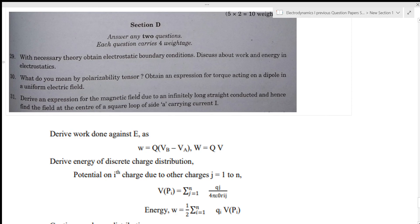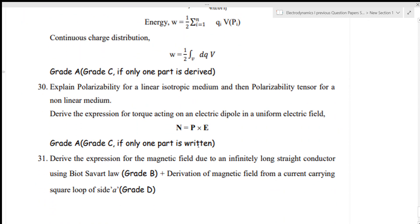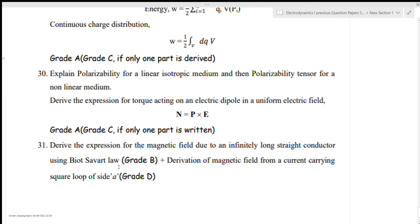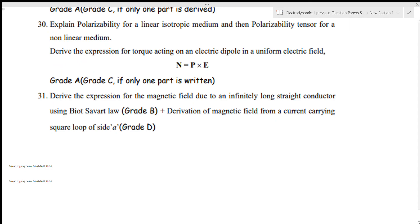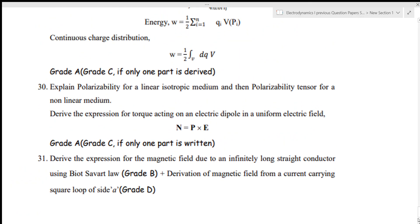Derive the expression for magnitude B due to infinitely long straight conductor. Hence, find the field at the center of the square loop of side A carrying current I. You can use the derivation for current carrying square loop of side A from the question paper in 2015.